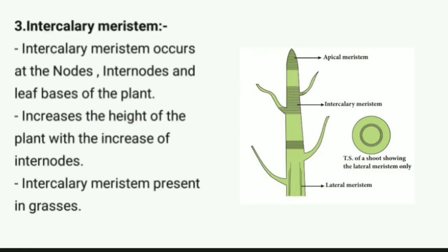Intercalary meristem occurs at the nodes, internodes, and leaf bases of plants. It increases the height of the plant with an increase in internodes and is present in grasses.